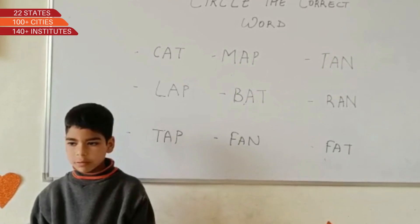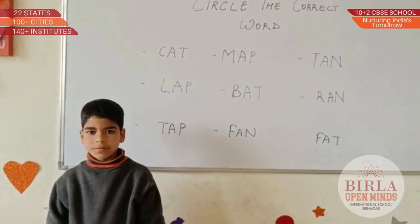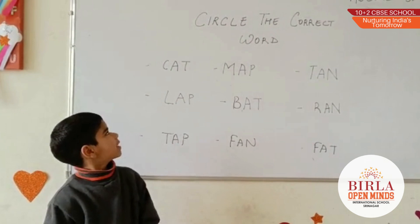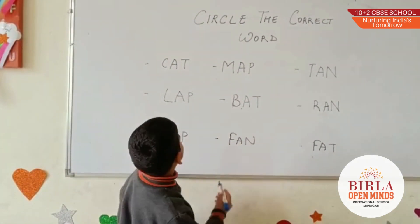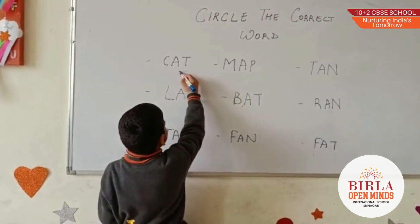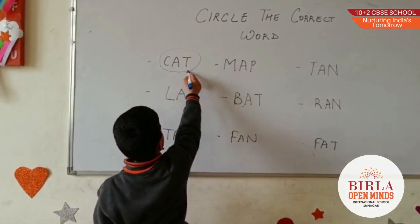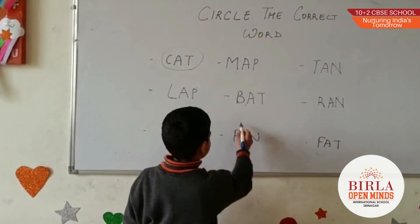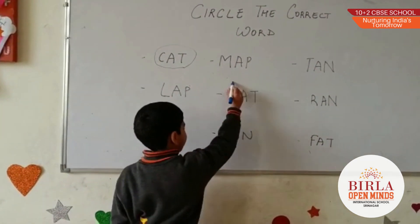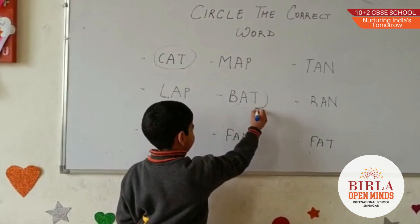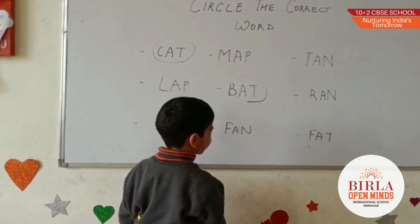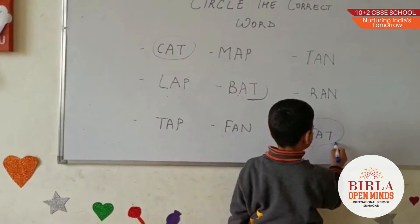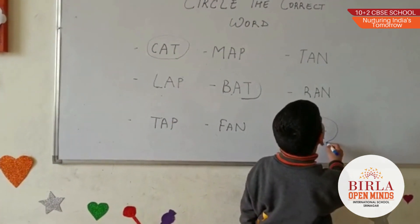Come on. What activity are we doing today? Can you circle AT family words? Very good. Very good. Next. Very good. Thank you.